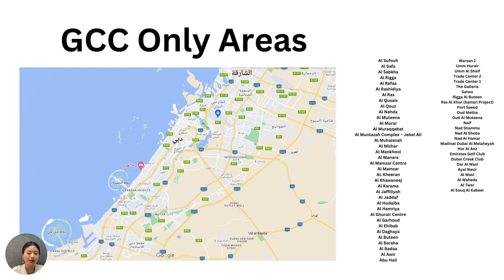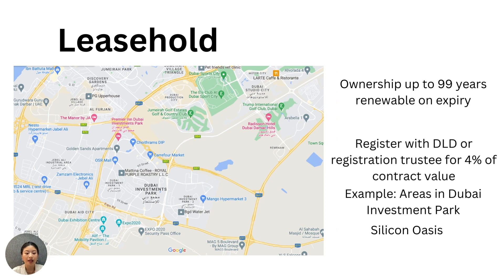Aside from freehold and GCC-only areas, we have a third category: leasehold. This allows you to have ownership of a property for up to 99 years and it's renewable on expiry. If you want to make modifications to your property, you will have to ask permission from the owner, and you can register your lease with the DLD or registration trustee for 4% of the contract value. At the end of your contract, the property will return back to the owner. Examples of communities with leasehold properties are Dubai Investment Park and Silicon Oasis.